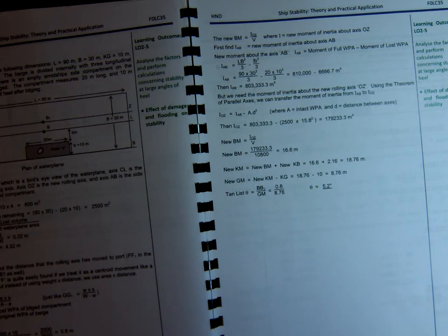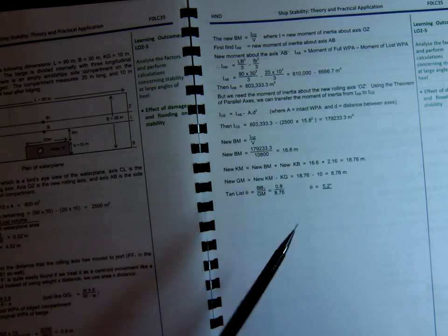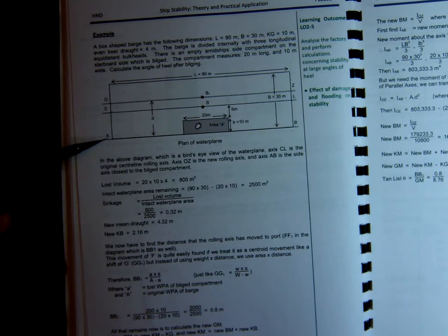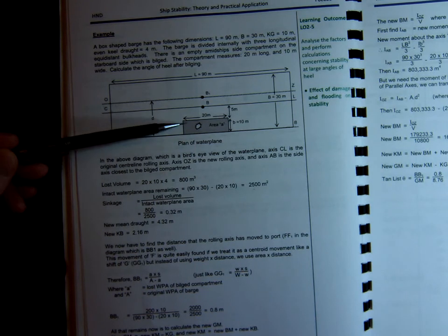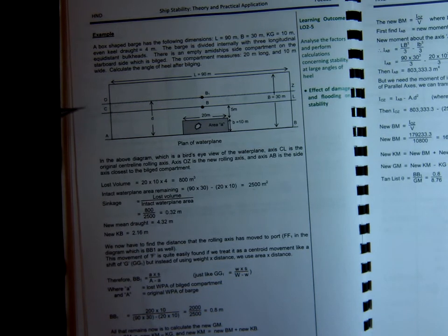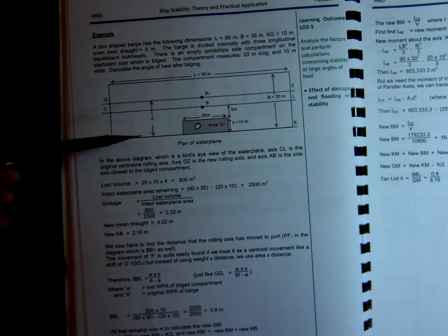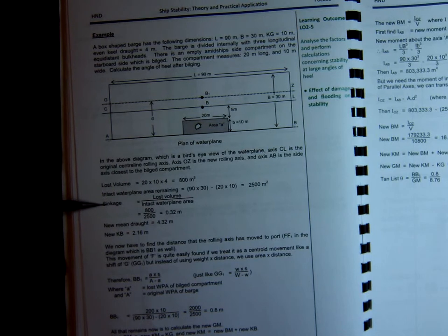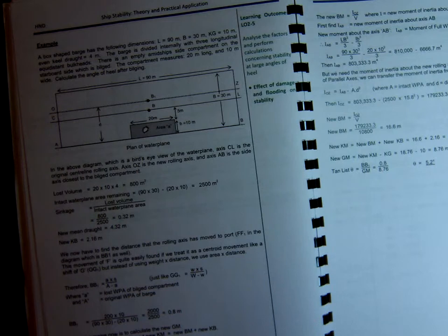It may well be worth just looking back on the page on the parallel axis theorem just to get an understanding of how inertia, how it affects us at the axis AB and how our rolling axis originally at the centerline has now moved because of the bilged compartment on this side. So it might be worth just referring back to that just to help you understand how you calculate the list problem. But as always with all these bilging problems, we always have to work out the sinkage. Never miss that out. Always get the sinkage first and then everything else follows from that. Thank you.